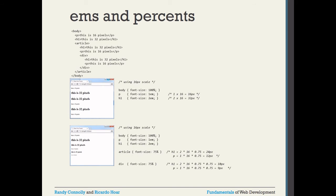Suppose you have an article with a font size of 75%. Under that article, h1 equals 2 × 16 × 0.75 = 24 pixels, and p equals 1 × 16 × 0.75 = 12 pixels. Similarly, if you have a div inside the body also at 75%, the h1 inside the div equals 2 × 16 × 0.75 × 0.75 = 18 pixels, and p equals 1 × 16 × 0.75 × 0.75 = 9 pixels. That is how relative font sizing works in HTML with CSS.